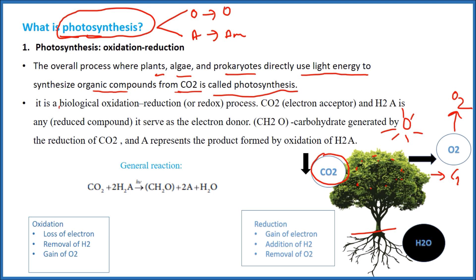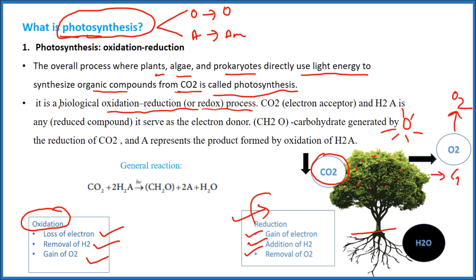Photosynthesis is an oxidation-reduction process. In any reaction, if there is loss of electron, removal of hydrogen, or gain of oxygen, we call it oxidation. On the other hand, reduction is opposite to oxidation — if there is a gain of electron, addition of hydrogen, or removal of oxygen, we call it reduction.